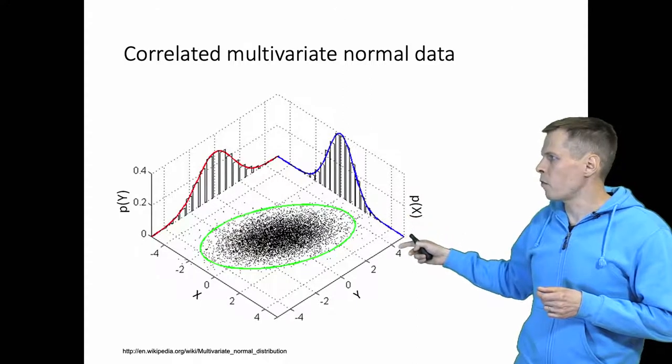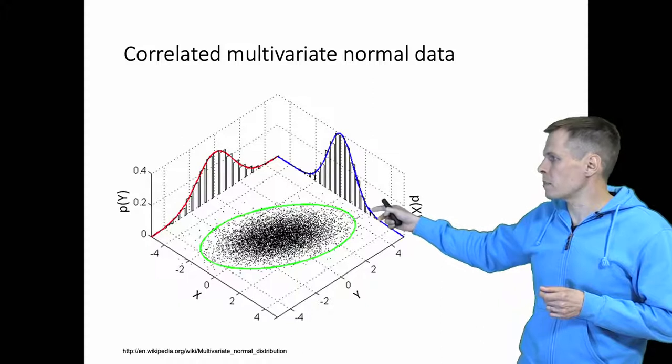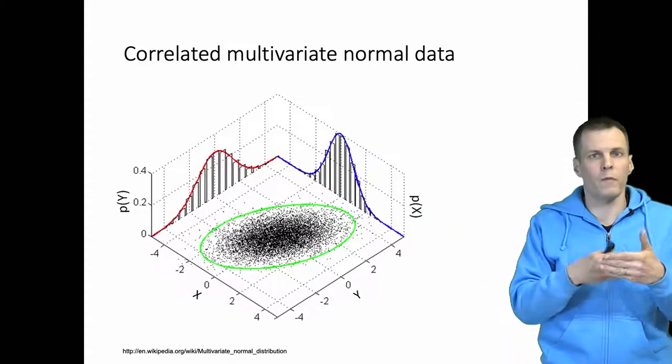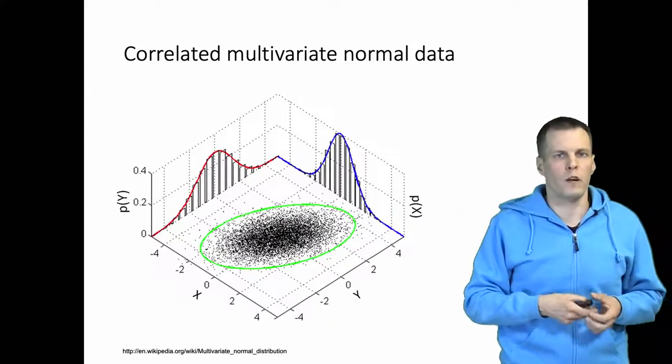So if a value of 4 was observed for y, then the predicted, the expected value for x would be 2. So they are correlated. So the probability of one depends on the probability of another one or the observed value of another one.